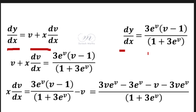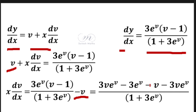dy/dx equals 3e^v times v minus 1, divided by 1 plus 3e^v. Substituting, the next step gives plus v minus v. This v times (1 plus 3e^v) gives a minus v term and a minus 3v·e^v term. The term minus 3v·e^v is balanced on both sides.